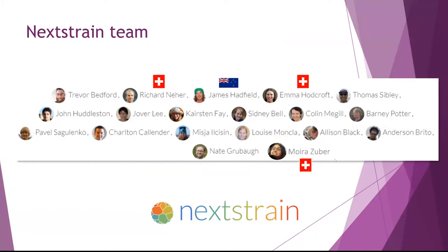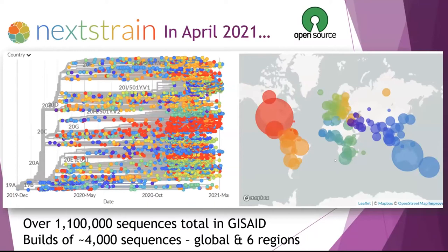If you go to nextstrain.org, you'll see our default SARS-CoV-2 view. It's much more complicated than the toy examples I showed at the beginning of the talk, but the underlying ideas are still the same — viruses closer together on the tree are more closely related. We have representation from over about half the countries in the world. But as I mentioned, we don't have every country, and we don't always have representative or recent samples. We always have to be cautious about sample bias.